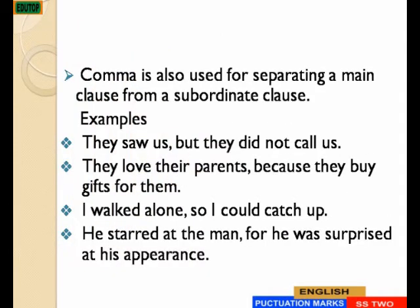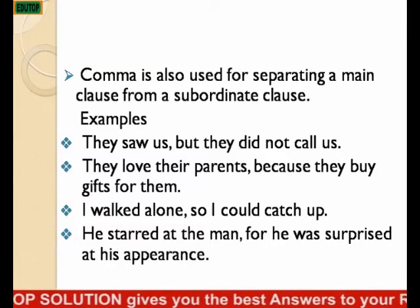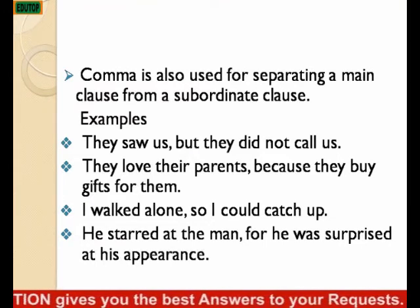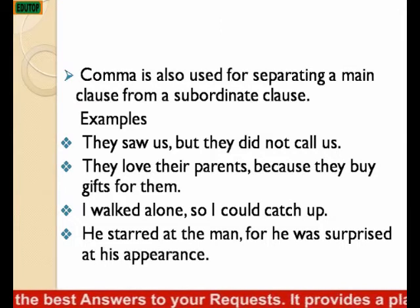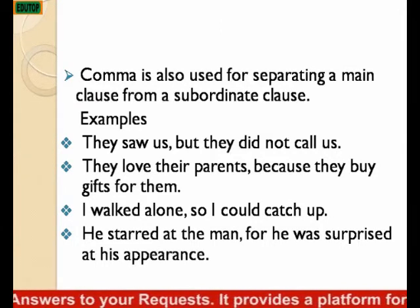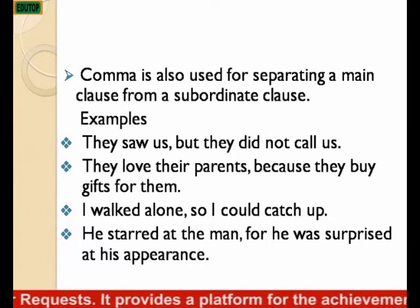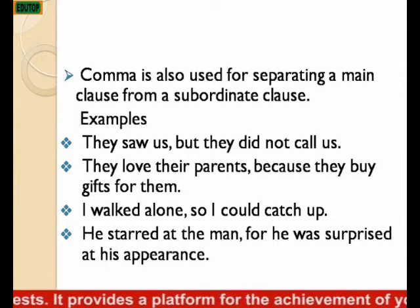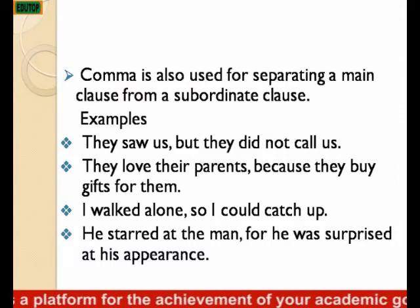Comma is used for separating a main clause from a subordinate clause. Examples: They saw us, but they did not call us. 'But they did not call us' is the subordinate clause; 'They saw us' is the main clause — the two have been separated by comma. Other examples: They love their parents, because they buy gifts for them. I walked alone, so I could catch up. He stared at the man, for he was surprised at his appearance.